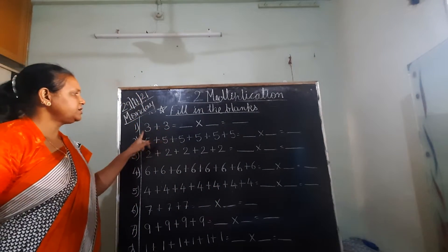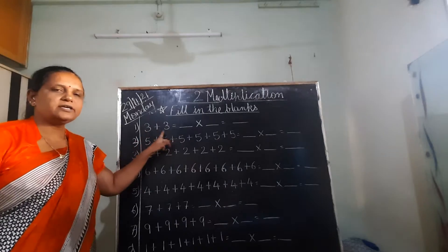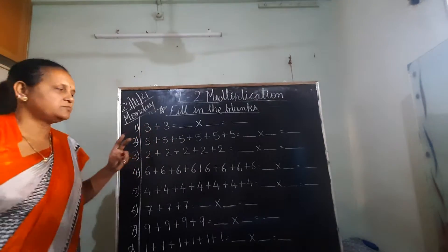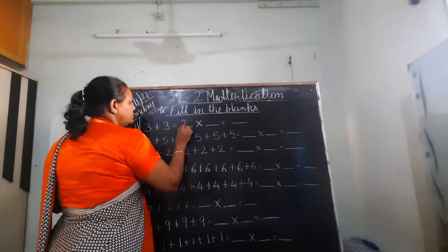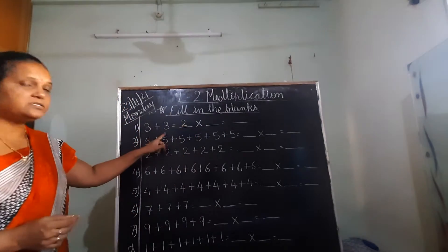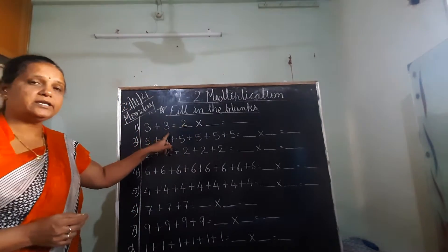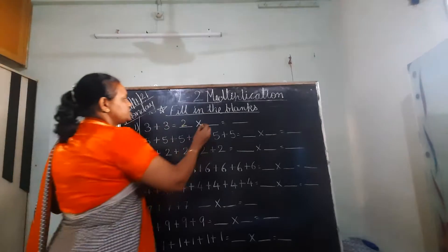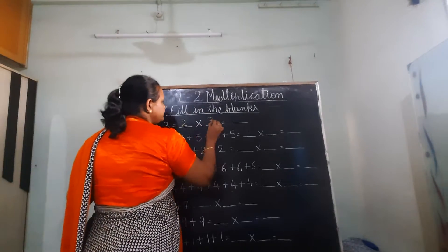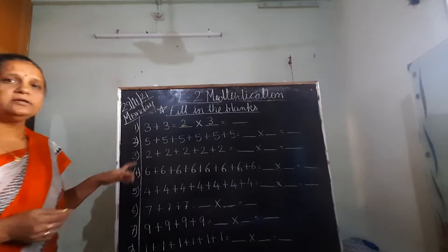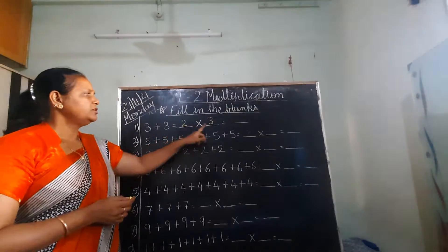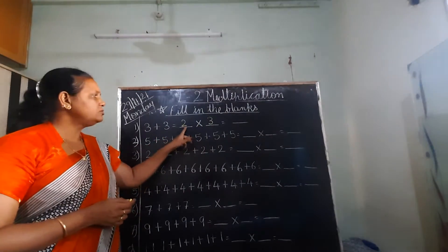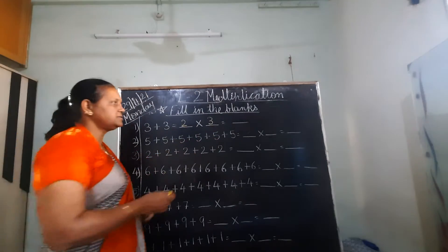Which number is repeated, and how many times? This 3 is repeated 2 times, so here you have to write 2. And which number is repeated again and again? 3. So write 3 here. Now if we do multiplication, what will the answer be? 2 3's are 6.